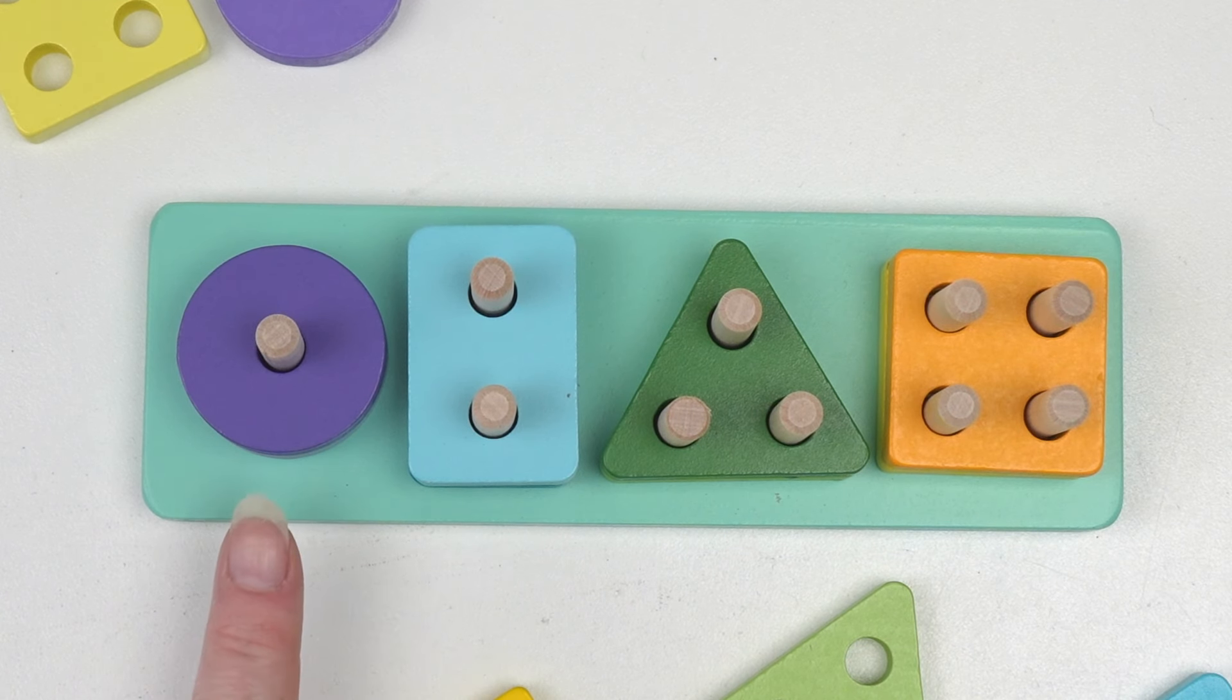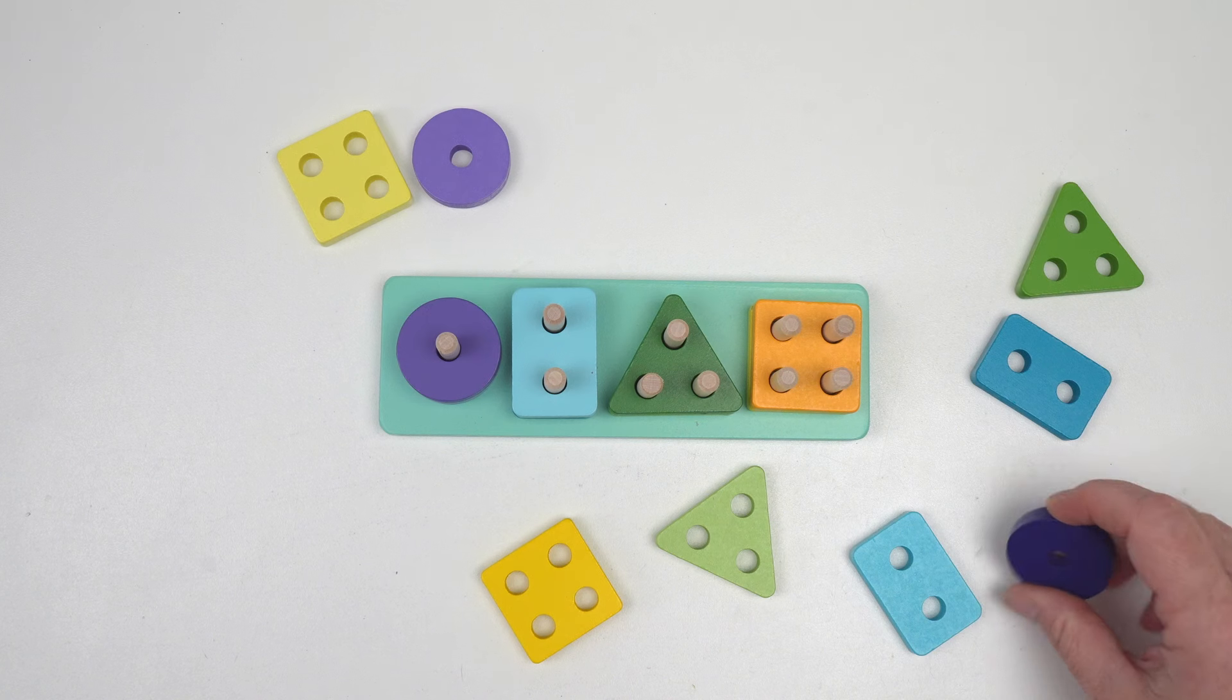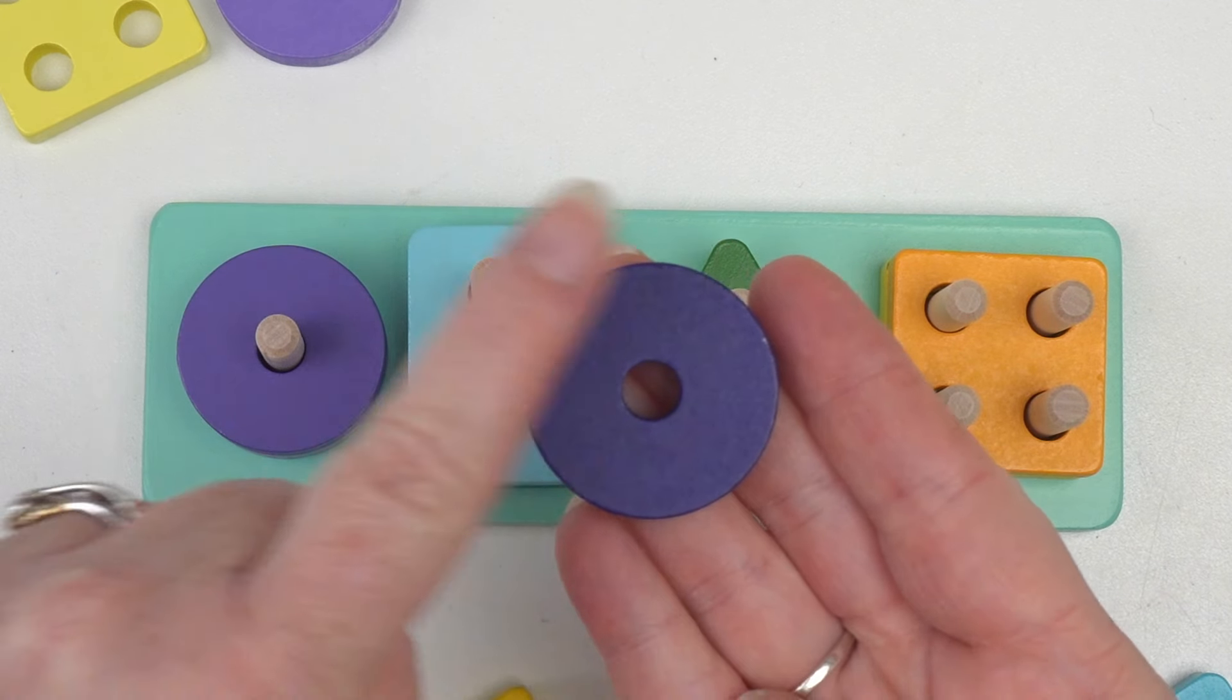So what was our first shape again? A circle! And circles are perfectly round.